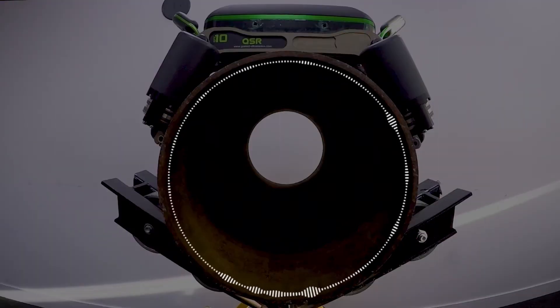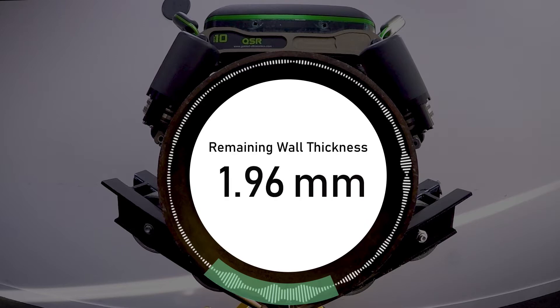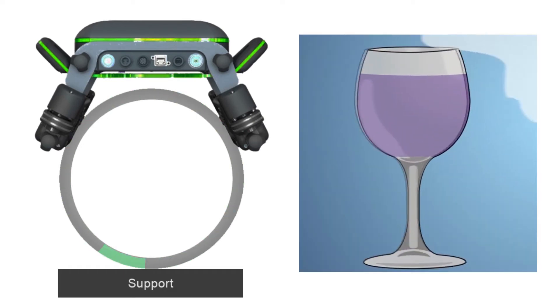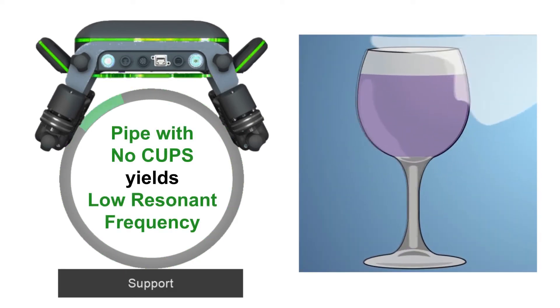The QSR1 uses circumferential guided waves and a frequency-based analysis method for accurate corrosion sizing. GUL scanning's frequency-based method for corrosion sizing is analogous to the concept of resonant frequency of a water-filled glass.